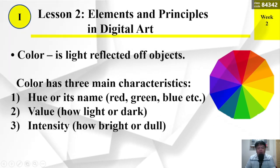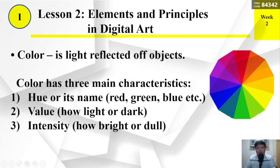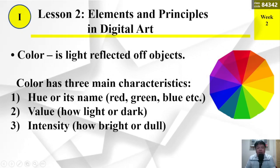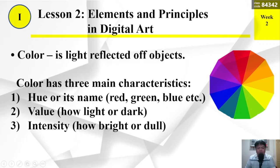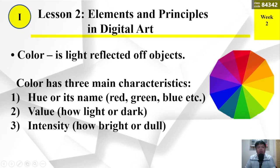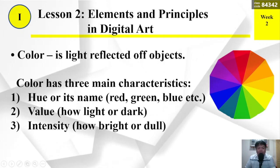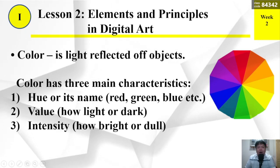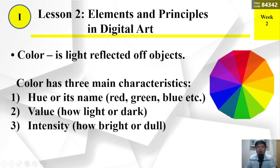Color is light reflected off objects. Color has three main characteristics: first, hue — its name, such as red, green, blue; second, value — how light or dark; and third, intensity — how bright or dull.